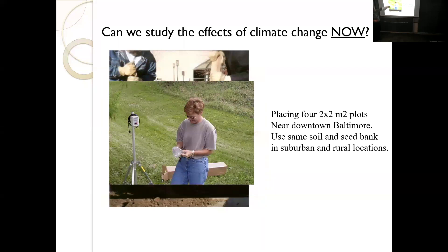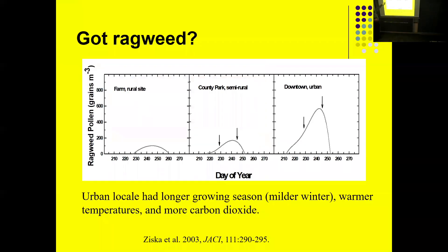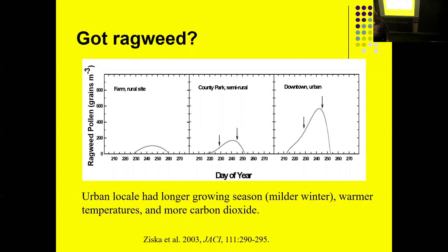We used rotor rods to monitor the pollen. This is our ragweed pollen from the farm site, the suburban site, and the downtown site — on a per plant basis. Being a short day plant, it started to flower at the farm site around this time, maximized around day 245 and then stopped. You can see it's starting a little bit earlier in the suburban site, a lot earlier in the downtown site. On average, looking at the area under the curve, a ragweed plant growing under high CO2 and warmer temperatures is producing about tenfold more pollen than the same plant growing at the farm.